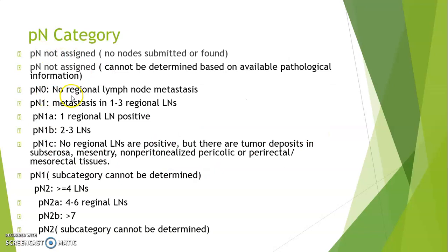For colorectal PN category: N0 — no regional lymph nodes. N1 — metastasis in 1 to 3 regional lymph nodes, further divided into N1A (one lymph node involved), N1B (2 to 3 lymph nodes), and N1C — no regional lymph nodes are positive but there are tumor deposits in subserosa, mesentery, non-peritonized pericolic or perirectal, or mesorectal tissues. N1 subcategory not determined. N2 — more than or equal to 4 lymph nodes; N2A — 4 to 6 lymph nodes; N2B — more than 7 lymph nodes involved.